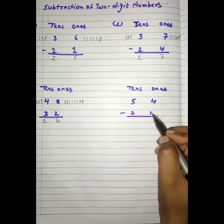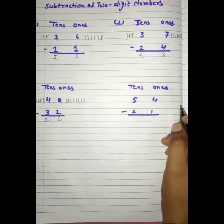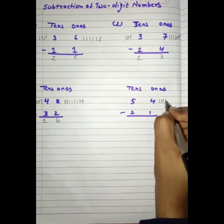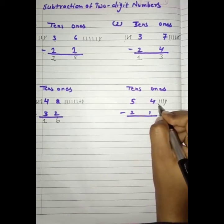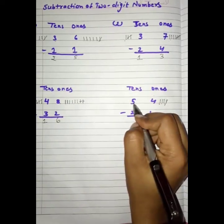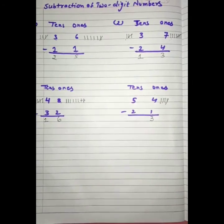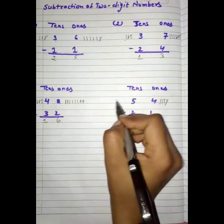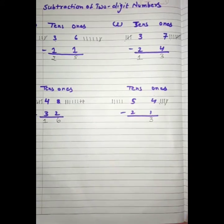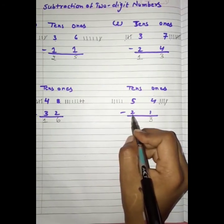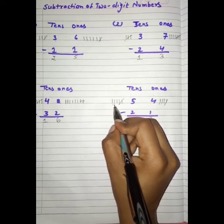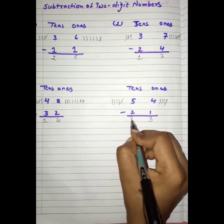See the next question: 4 minus 1. Hame 4 minus 1 karna hai. Hum 4 lines draw karenge and 1 minus kar denge. Kitnay lines bachye: 1, 2, 3. And next hai 5 minus 2. Hame 5 minus 2 karna hai. We have to draw 5 lines: 1, 2, 3, 4, 5. And we have to minus 2: 1, 2. Kitnay bachye: 1, 2, 3. We have 3 here.